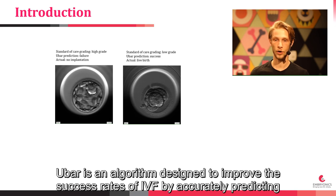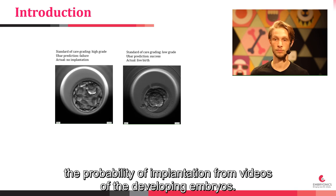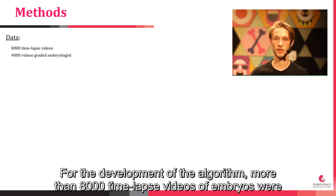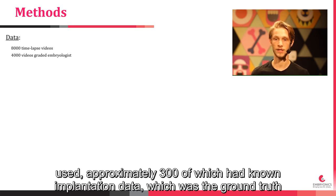UBAR is an algorithm designed to improve the success rates of IVF by accurately predicting the probability of implantation from videos of the developing embryos. For the development of the algorithm, more than 8,000 time-lapse videos of embryos were used, approximately 300 of which had known implantation data, which was the ground truth for the model.